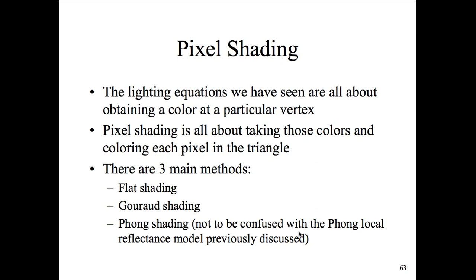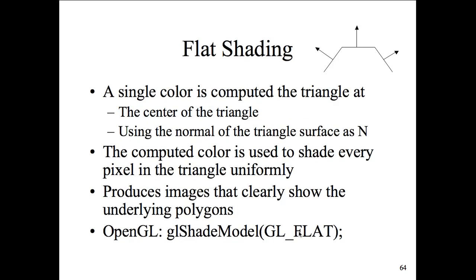Not to be confused with the Phong local reflective model — Phong is a person's last name, and his shading model is completely different from his lighting model. In flat shading, a single color is computed at the center of the triangle using the surface normals as n. The computed color shades every pixel in the triangle uniformly — all the same color, no lighter or darker contrasts. The shade starts at a center location and extends outward in the defined angle.